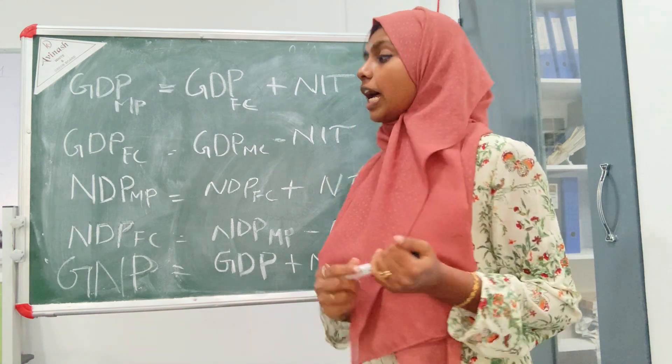The important things to understand are net vs gross, domestic vs national, circular flow of income, and the three methods: value added method, income method, and expenditure method. If you found this video helpful, please like and support us, comment, and thank you so much for watching.